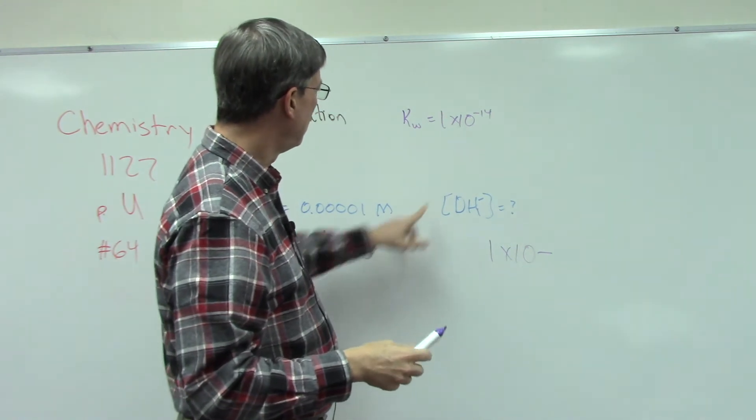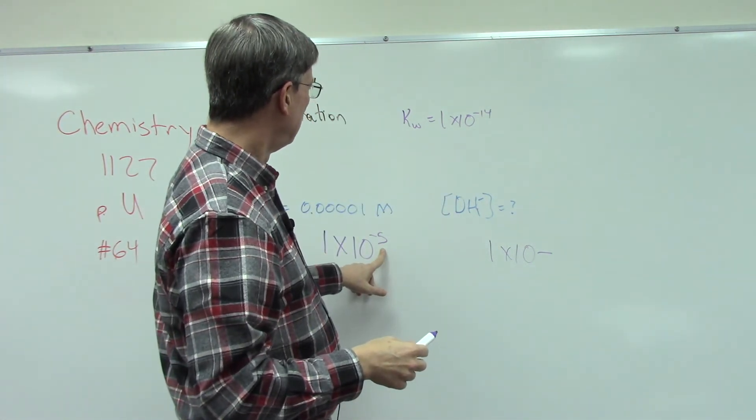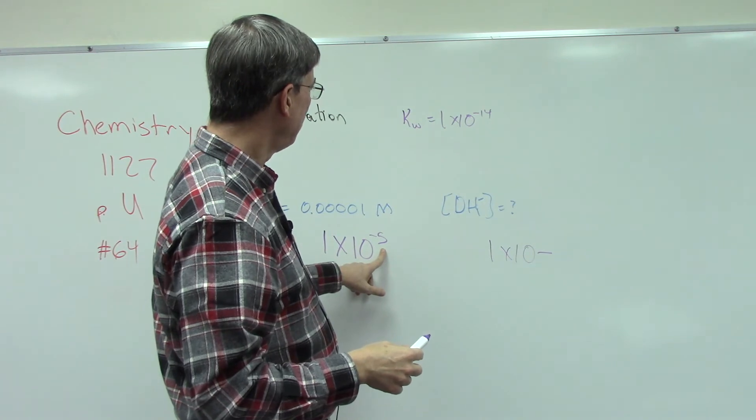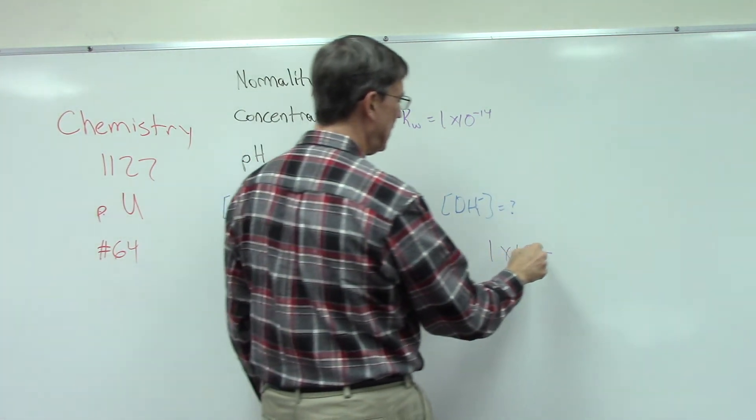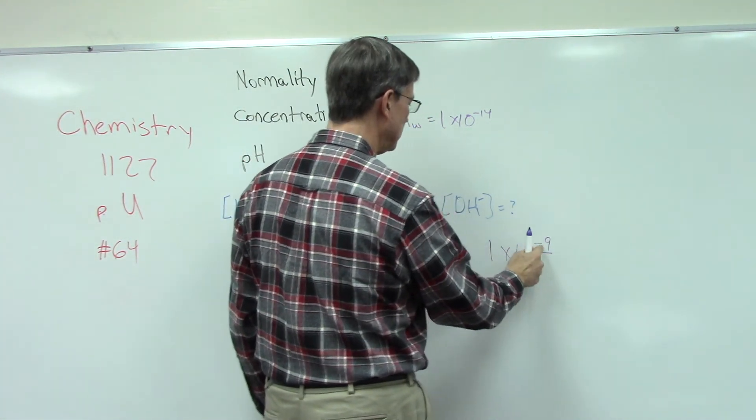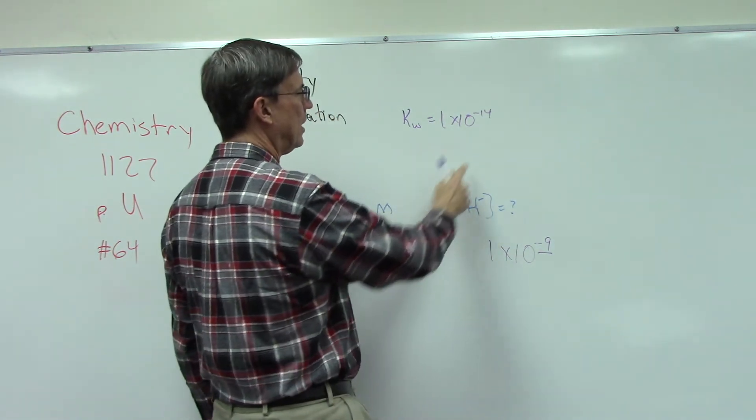So negative 14, and then if we get rid of the negative five, pull out negative five, that means we would have to have negative 9 because negative 9 plus negative 5 is negative 14.